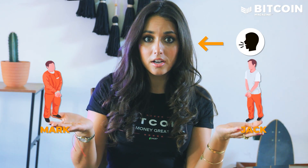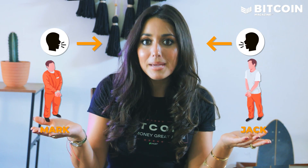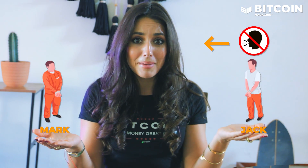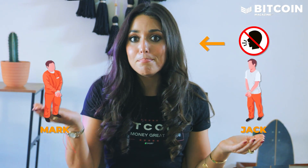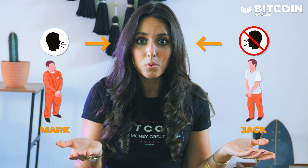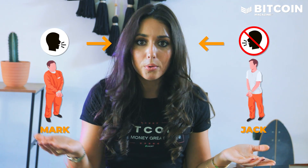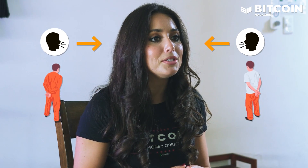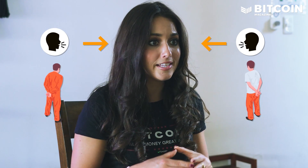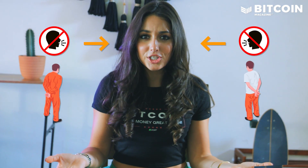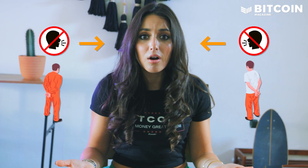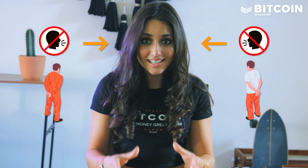Prisoner A is Jack, Prisoner B is Mark. If Jack betrays Mark, Mark's best response is to betray, minimizing his potential loss. But if Jack remains silent and cooperates, Mark's best response is still to betray, as betraying would offer a better payoff — going free — compared to cooperating and getting a light sentence. Since both prisoners reason similarly, they both end up betraying each other and getting moderate sentences, even though mutual cooperation would have led to a better overall outcome.